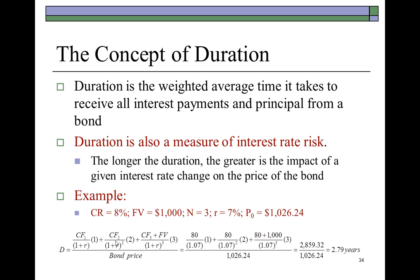One major way to capture the impact of changes in interest rates on the price of a bond is duration, which is the weighted average time that it takes to receive all cash flows from an investment — in the case of a bond, all coupon payments and principal. This is a three-year bond with N equal to three. For each year, you find the present value of the corresponding coupon payments or cash flows. The present value of the first cash flow divided by the bond price represents a weight.